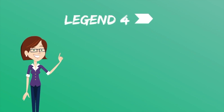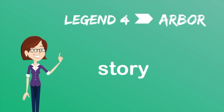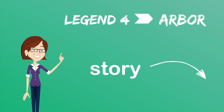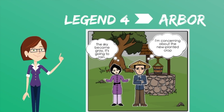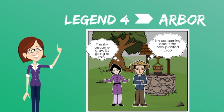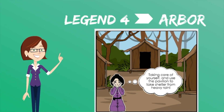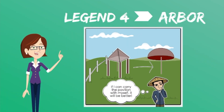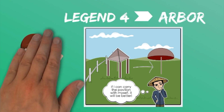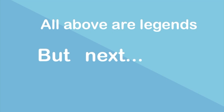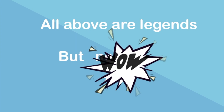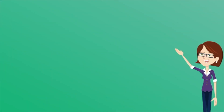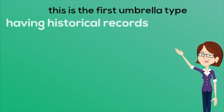And the last legend: let's see a story. The sky became grey and it was going to rain. The husband was concerned about the newly planted crops, and the wife suggested him to use the pavilion as a shelter from the heavy rain. After the legends, let's see the first umbrella having a historical record — the paper umbrella.